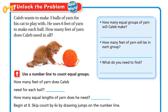Okay, so let's unlock the problem. Caleb wants to make three balls of yarn for his cat to play with. He uses six feet of yarn to make each ball. How many feet of yarn does Caleb need in all? So how many equal groups of yarn will Caleb make? Caleb wants to make three balls of yarn — three balls, each is six feet of yarn. So it's like three groups, each is six feet. They are three equal groups.